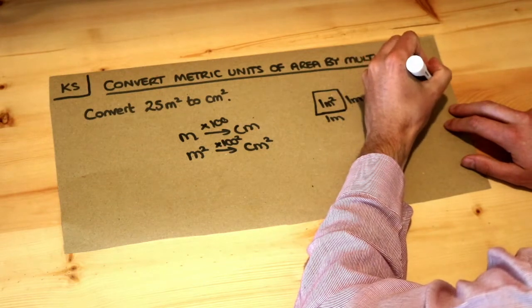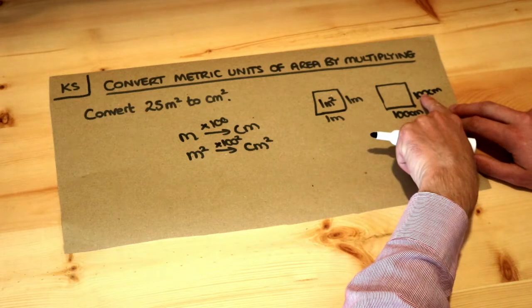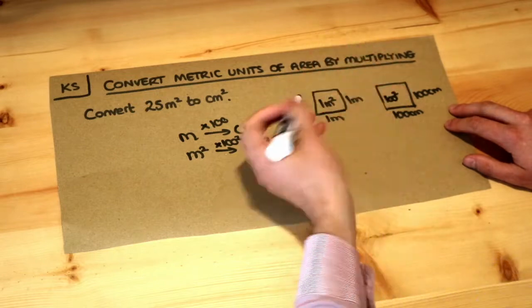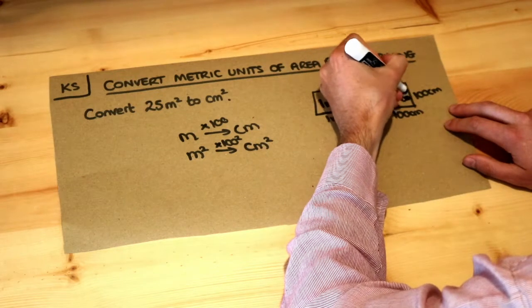And if we times the two together we'd have 100 times 100 to get the area. So that would be 100 squared and the units would be centimetres squared.